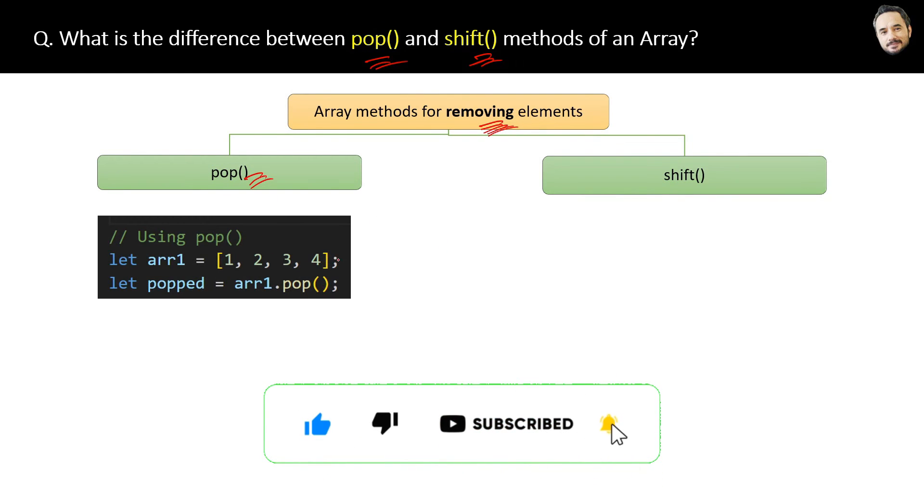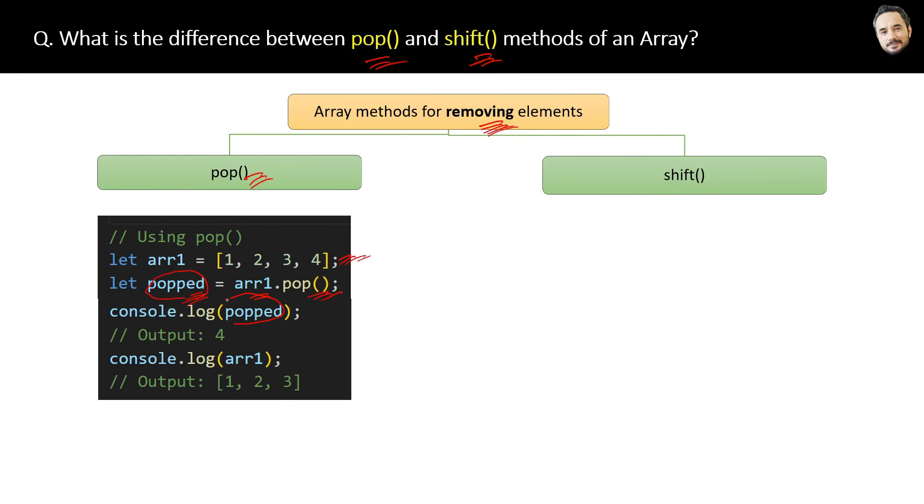Here is an array of numbers. Now if you use the pop method on this array, then the pop method will get the last element of the array as the result. If we log this popped variable, the output will be 4. And now if we print the original array, the output will be 1, 2, 3.